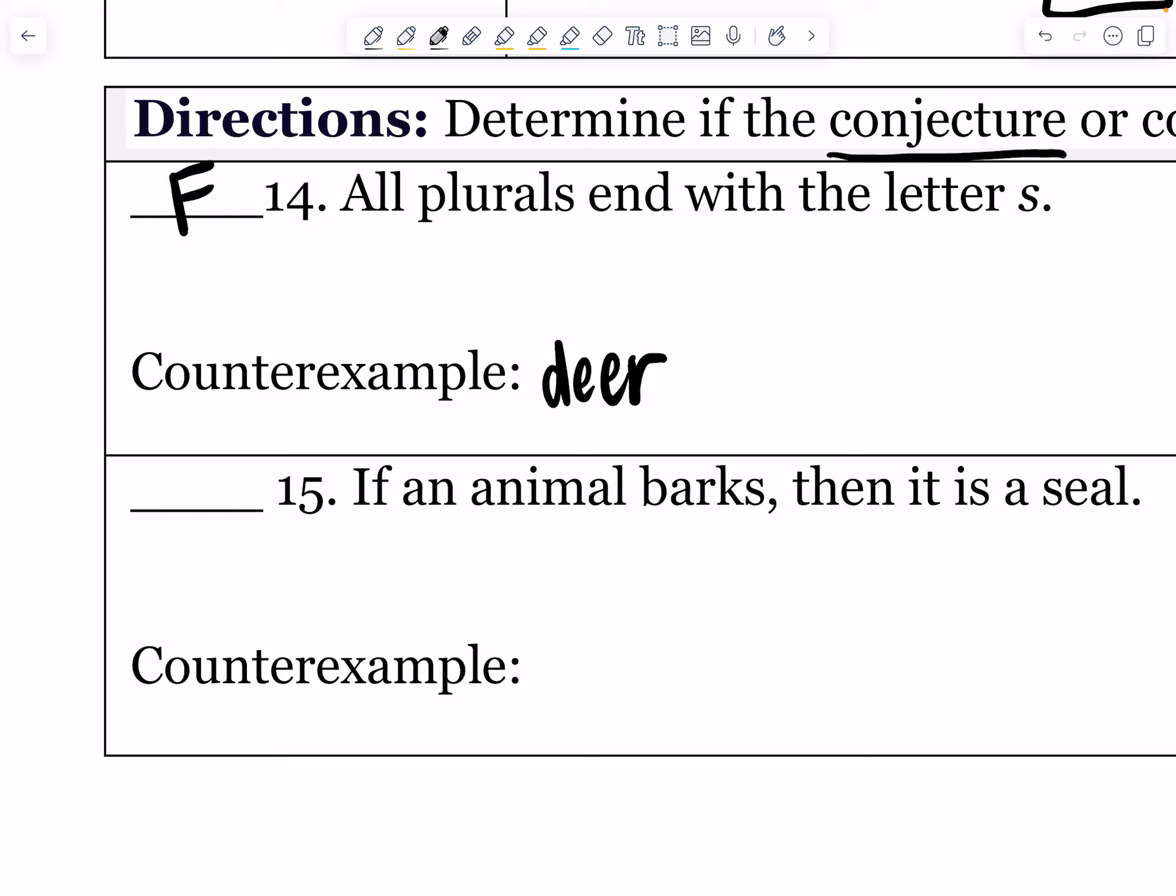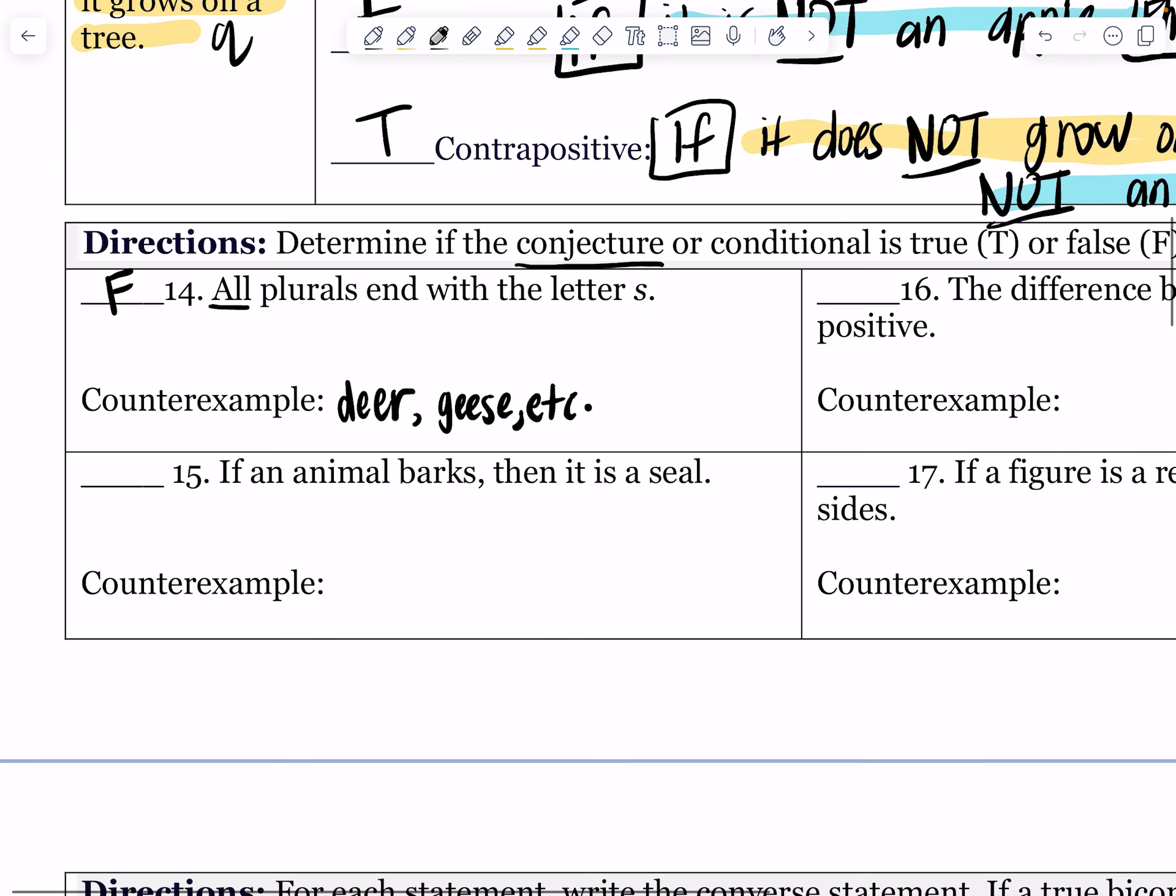So you could say deer, you could have said geese. I'm going to put et cetera here because there's way more than one. All you need is one though to discredit this statement. Not all plurals end with the letter S - that is false, that is incorrect.